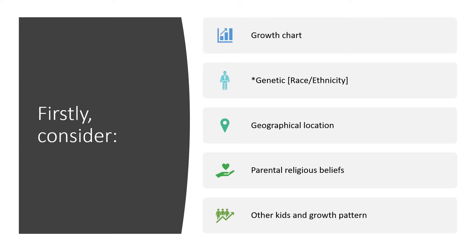When dealing with growth charts, we will go through a lot of pieces of information, but it is wise to start from the growth chart and see the pattern. What is the genetic constitution, the familial or hereditary nature? Have we seen the mom? Are they small? Before concluding this child is too small, we need to consider race, ethnicity, geographical location, beliefs — parental or religious — and the growth pattern of other children in the family.